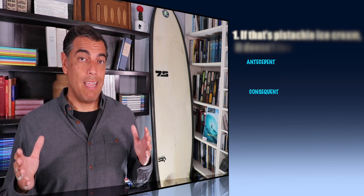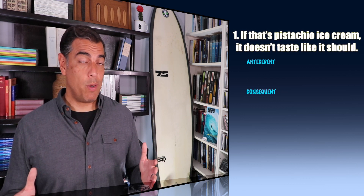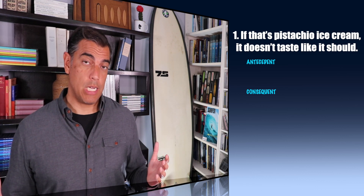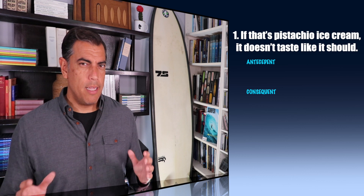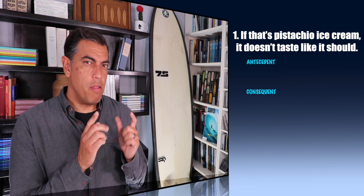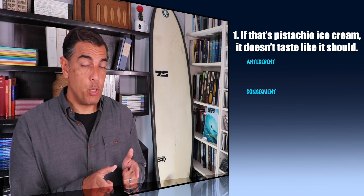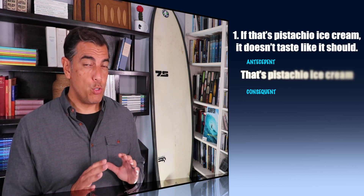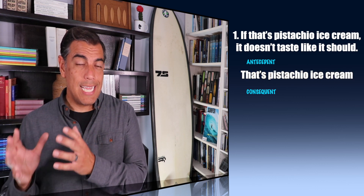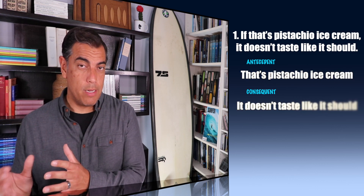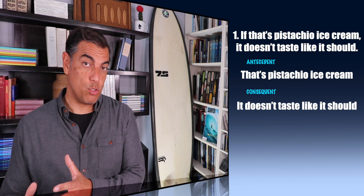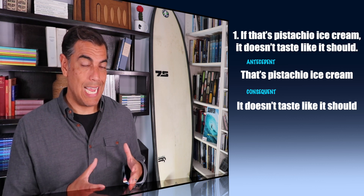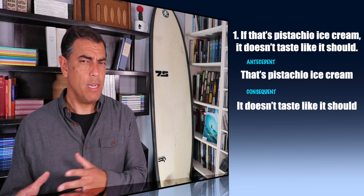Number one: if that's pistachio ice cream, then it don't taste like it should. Which one is the antecedent and which one is the consequent? This proposition is saying that its first component — that is pistachio ice cream — can't be true without the second component — it don't taste like it should — also being true. So the first one is the antecedent, the second one is the consequent.